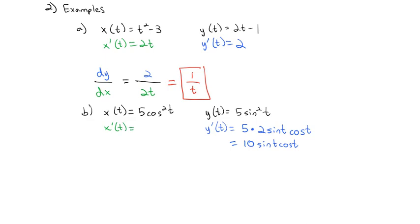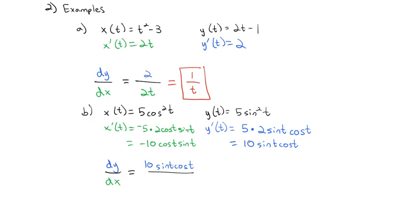Now the derivative of x with respect to t: we have 5 times 2 cosine t times the derivative of the inside, which is negative sine t, giving us -10 cos(t)sin(t). So dy/dx = 10 sin(t)cos(t) over -10 cos(t)sin(t). We get a lot of cancellation, leaving just -1 in the denominator — 1 over -1 is just -1, which means the slope of this function is -1.